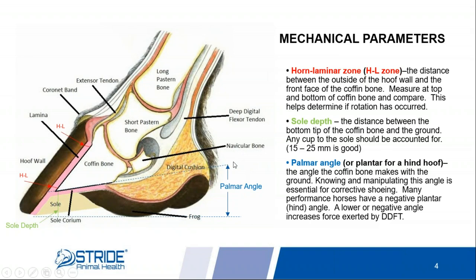The third mechanical parameter is what we call the palmer angle — palmer for front feet, planter for hind feet, but it's the exact same thing. It's simply the angle of the coffin bone in relation to the ground surface. Some horses will have a palmer angle of zero and be perfectly sound. Most horses, we want that to be slightly positive — three, five, or eight degrees. It can get too steep and create problems, as in a club foot. We really don't want it to be negative.